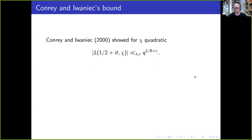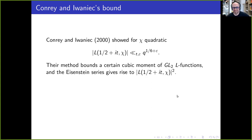Burgess's result was the state of the art for a very long time. In 2000, Conrey and Iwaniec improved this for quadratic characters, proving a Weyl-quality bound — the same exponent one-sixth that Weyl got for the zeta function. This was a big deal. Their method is completely different from Weyl and Burgess. The overall idea is to view the Dirichlet L-function absolute value squared as belonging to the Eisenstein part of some GL(2) family of automorphic forms.